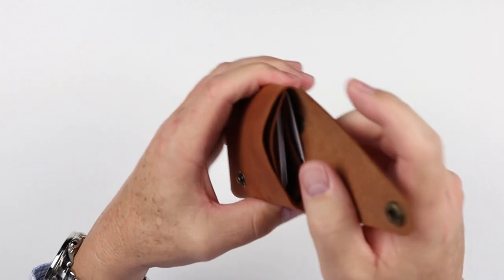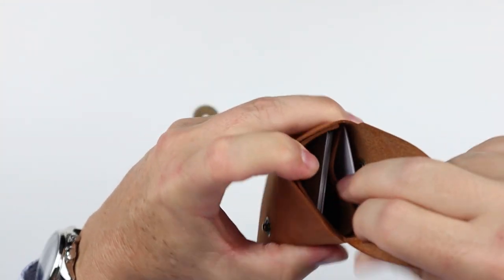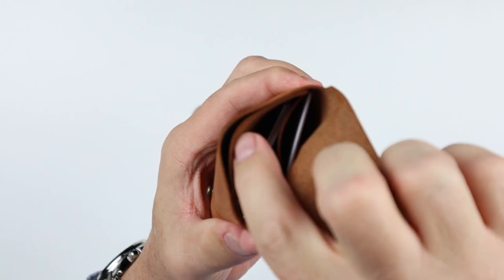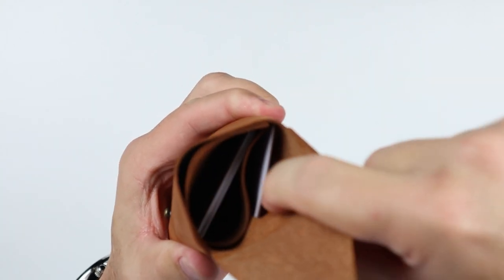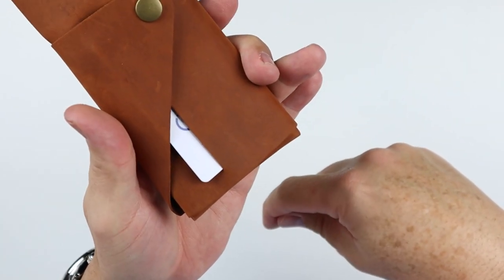So if you're going to use coins, you need to put it in the same slot here where you have these other cards, which is in between these two pieces of leather. If you put anything on this side, it will go all the way through and fall out.